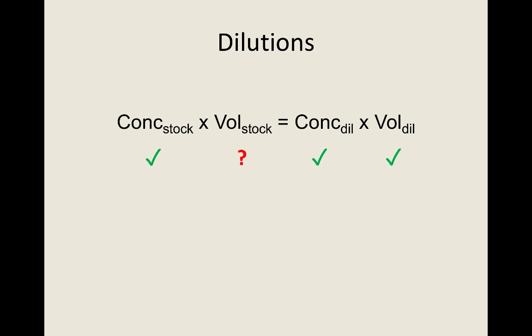The equation can be rearranged to get volume of the stock solution on one side as this is what you're trying to calculate. You can then calculate the volume of stock solution to use. To actually make the solution, you would add this volume of stock solution to the flask and make it up to the mark with solvent.